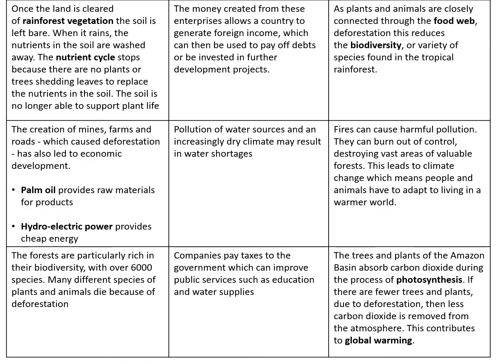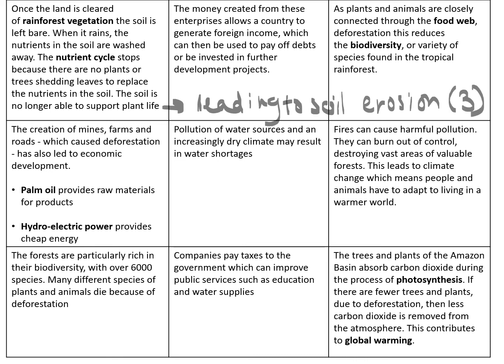Let's read the first one. Once the land is cleared of rainforest vegetation, the soil is left bare. When it rains, the nutrients in the soil are washed away. The nutrient cycle stops because there are no plants or trees shedding leaves to replace the nutrients in the soil. The soil is no longer able to support plant life, leading to soil erosion. This is an example of soil erosion — I would say that was pretty bad, I'd probably put that as three.